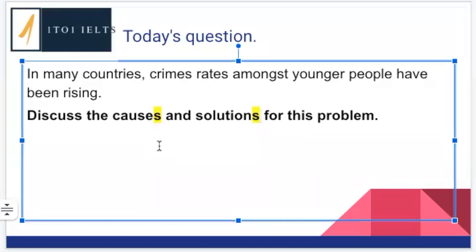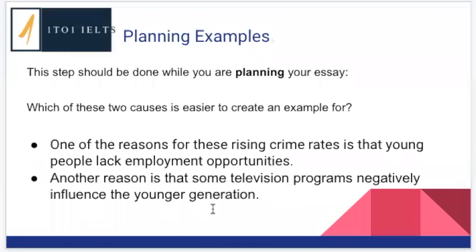We're only going to have an example for one of our causes. So we have two causes but only one example, and two solutions but only one example. That means when you are planning your essay, when you generate your two causes and two solutions, you need to think: which one of these is it easier to create an example for? Because the one that is easier to create an example for should be the cause you mention last. The more difficult idea goes first, the easier one to create an example for goes second, because we always give an example for our second idea.